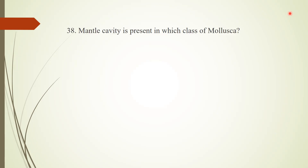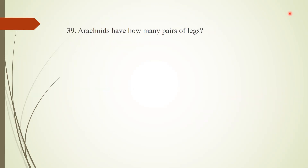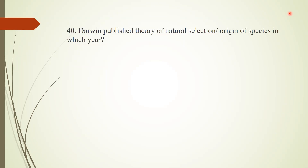Question 37: Pinworms are examples of which phylum? Answer: phylum Nematoda. Question 38: Mantle cavity is present in which class of Mollusca? Answer: class Aplacophora. Question 39: Arachnids have how many pairs of legs? Answer: four pairs of legs. Question 40: Darwin published the theory of natural selection and wrote 'On the Origin of Species' in which year? Answer: 1859.